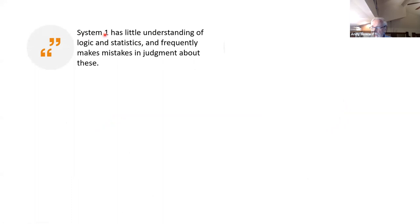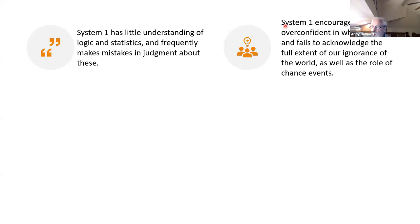System 1 has very little understanding of logic and statistics and frequently makes mistakes in judgment about these things. System 1 encourages us to be overconfident in what we know and fails to acknowledge the full extent of our ignorance of the world as well as the role of chance events. We think we know more than we know. We don't acknowledge the full extent of our ignorance, and we don't acknowledge the extent of chance. System 1 — our instinct — loves seeing patterns. Chance is not in there.